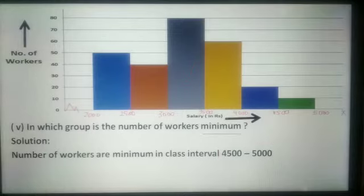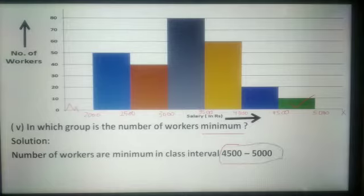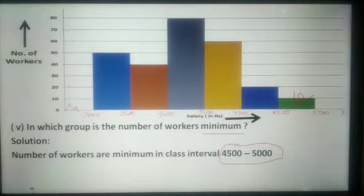In the next question, in which group is the number of workers minimum? When we see this histogram, the minimum frequency bar has class interval 4500 to 5000. So this is the class interval in which the number of workers is minimum.